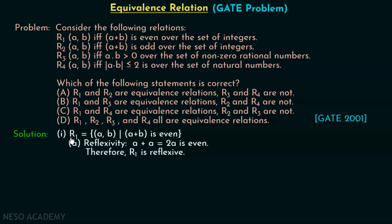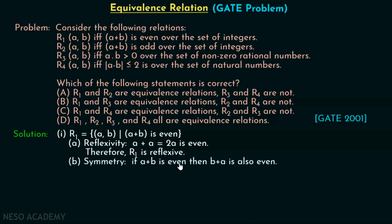Now let's check whether R1 is symmetric. According to the symmetry definition, if (a, b) belongs to R1 then (b, a) must belong to R1. This means if a plus b is even, then b plus a must also be even. This is true — we are just changing the order. Therefore, R1 is symmetric.